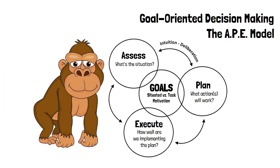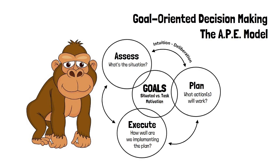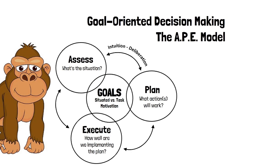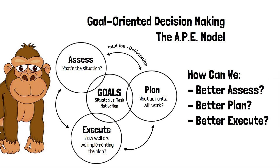The bottom line is that goal-oriented decision-making focuses on how we experience decision-making in the pursuit of what we are trying to achieve. And APE is a model that allows us to explore decision-making in terms of these experiences — in terms of how we can better assess, better plan, and better execute.